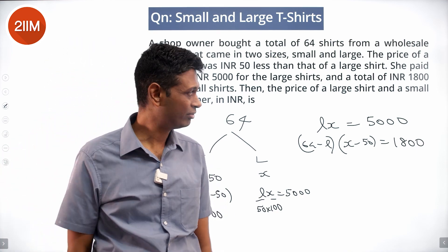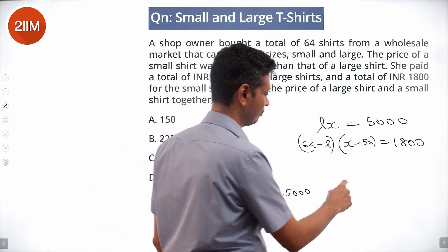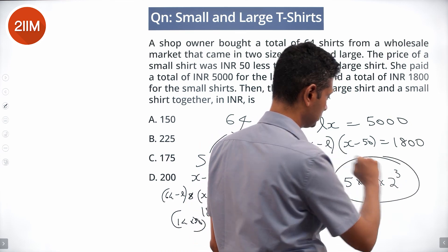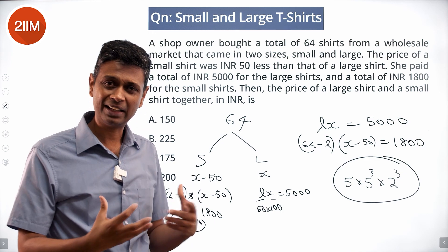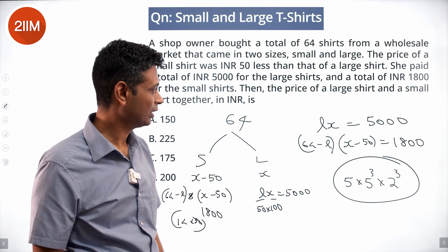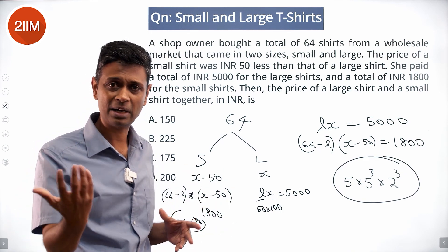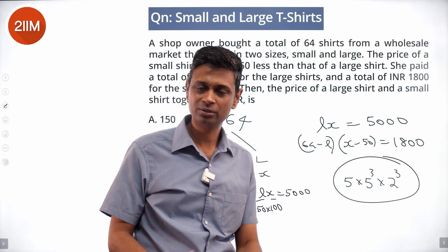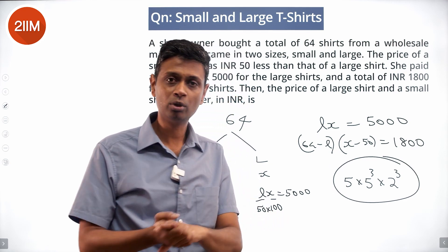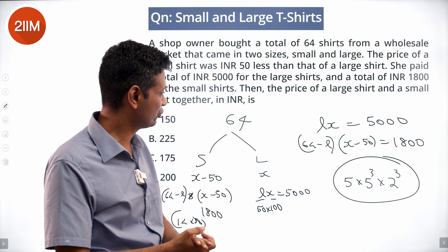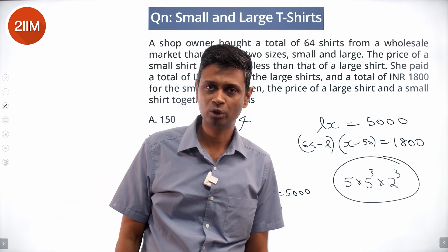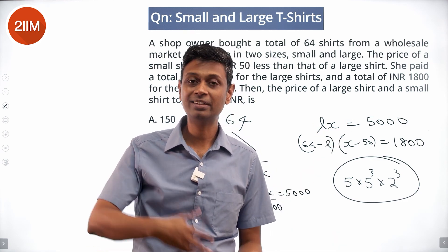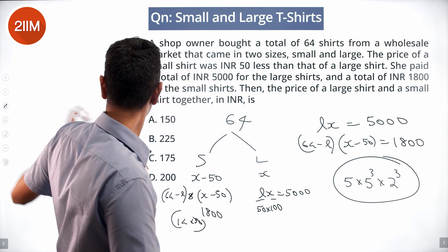They're probably looking at integer answers. 5000 is 5 to the power 4 times 2 cubed. It can be factorized. X should be more than 50 and L should be less than 64, so we can play around with this. We can find factors of 5000 less than 64 and then try to work with it.